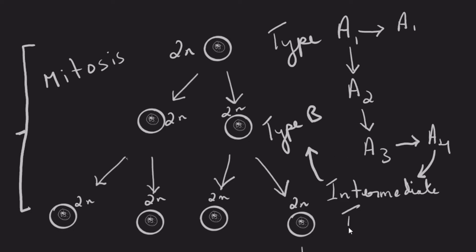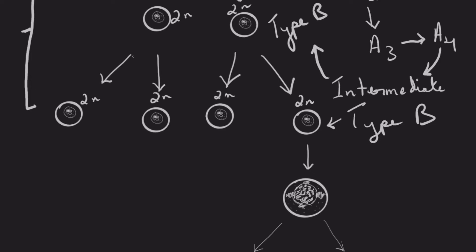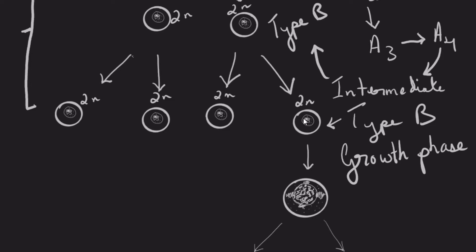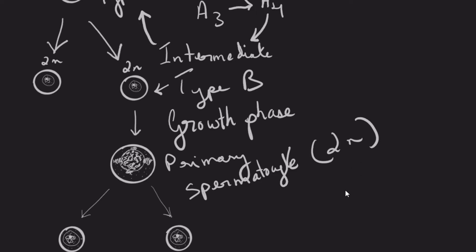The type B spermatogonia will then accumulate nutrition, cytoplasmic material, and nuclear material — essentially doubling its DNA and chromosomal material. All cell organelles in the cytoplasm will be duplicated and the cell will grow in size. This phase is referred to as the growth phase. The type B spermatogonia will grow and become the primary spermatocyte, which is still diploid and carries the normal set of chromosome number.